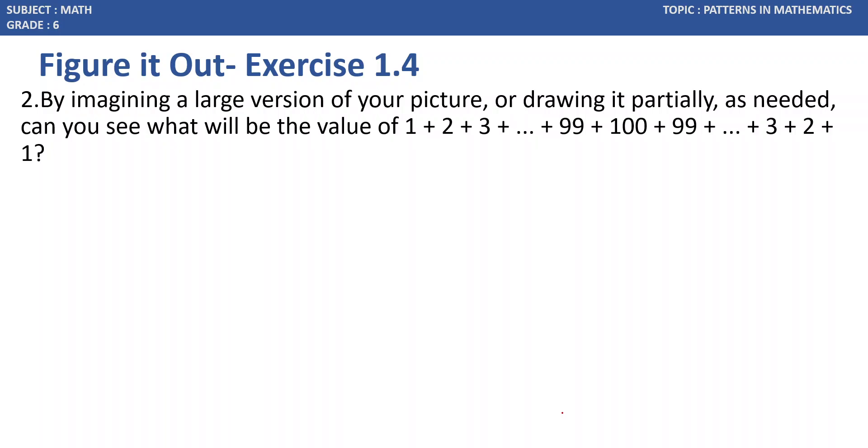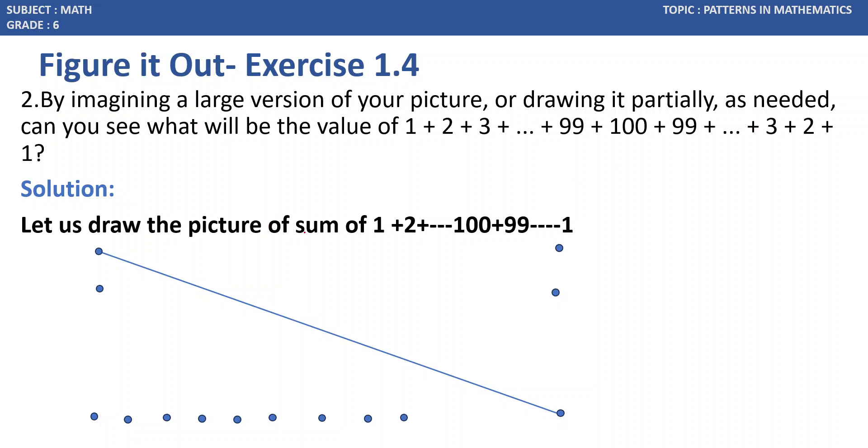Let us see the next problem. By imagining a large version of your picture or drawing it partially as needed, can we see the value of 1 plus 2 plus up to 100 plus 99 plus down to 1? Yes, let us see. As seen in the previous problem, this is the sum of natural numbers ascending till the nth number, then descending from the nth number to 1. As shown, this is the diagram. Assume like 1, and it will be 100 numbers. Then the 100th number, the diagonal will be like this.